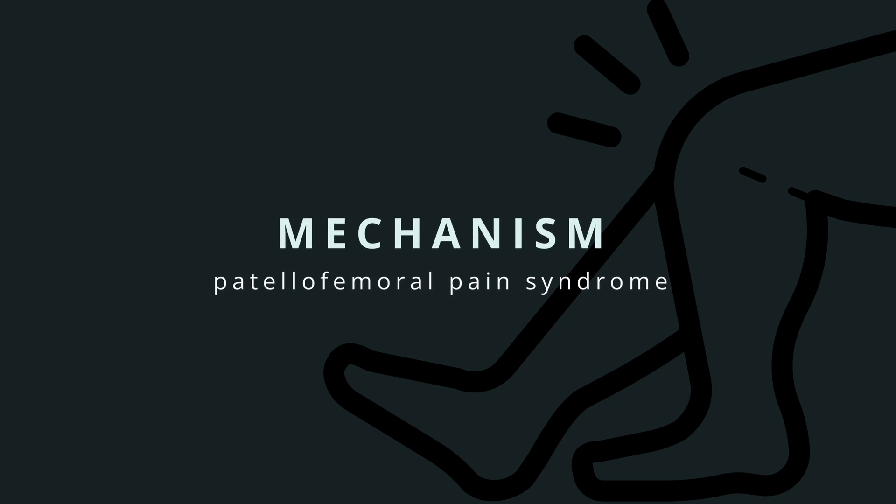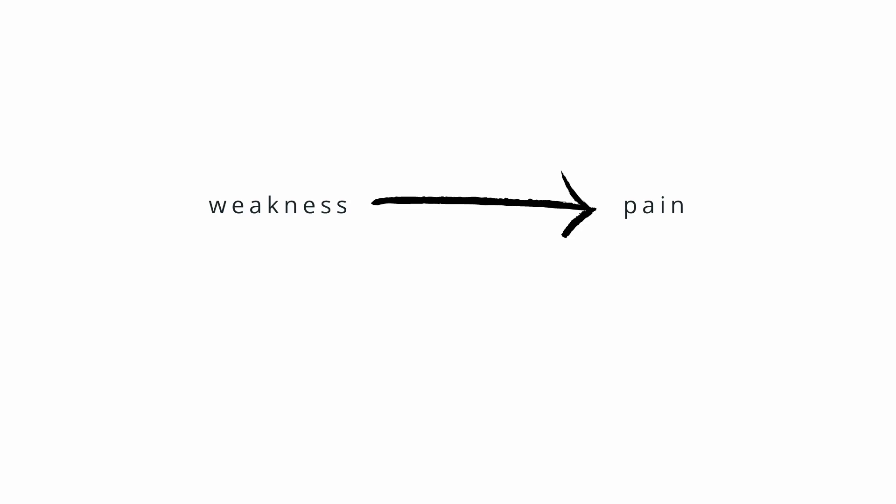Weakness of the quadriceps and of the glutes are typically tied to patellofemoral pain syndrome, but we run into a chicken-or-the-egg scenario here. Did the weakness exist before the pain, or did the pain lead to the weakness? For the quads, it does appear that weakness exists before the development of patellofemoral pain syndrome, but there is a caveat here.